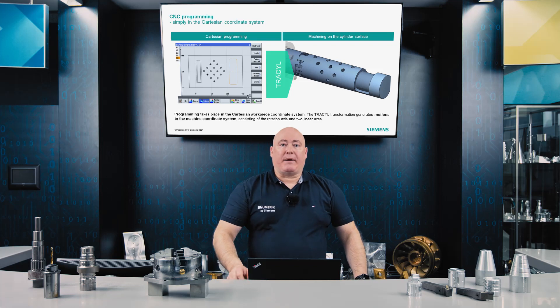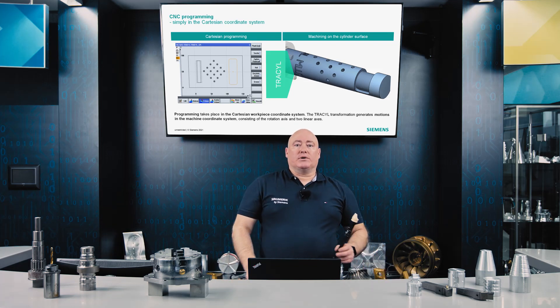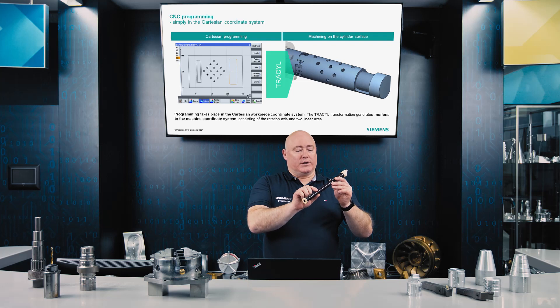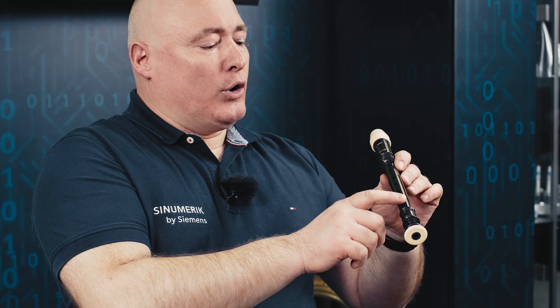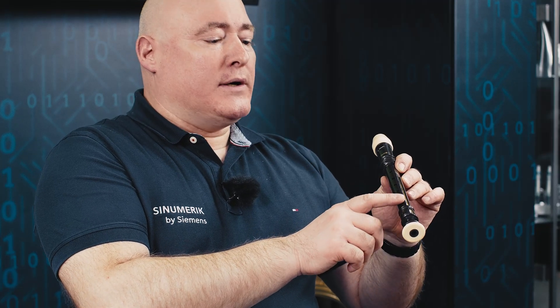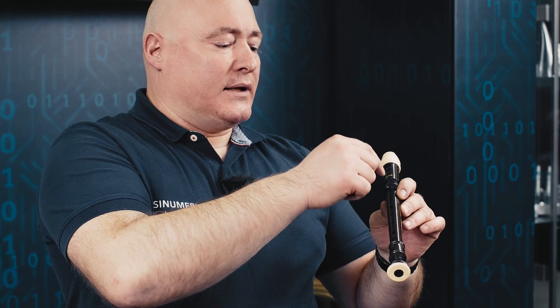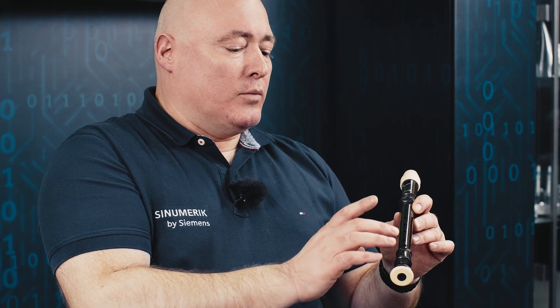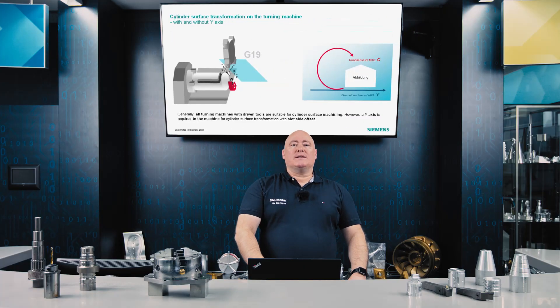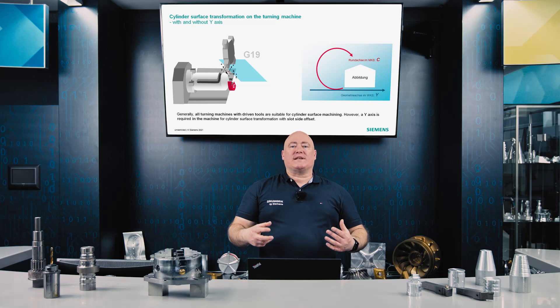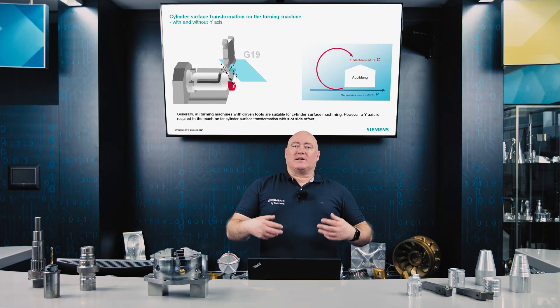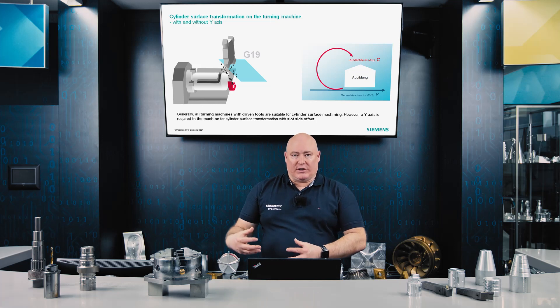A good example for TRAS-CIL machining is the manufacture of recorders. Here are the holes for the pitch. Using the TRAS-CIL method, these are drilled on the peripheral surface, and the surfaces are also milled, which is necessary to obtain the recorder contour. TRAS-CIL is a turning function and therefore originates from turning technology. TRAS-CIL can be used on both turning and milling machines.